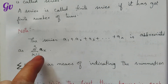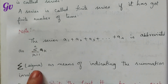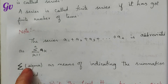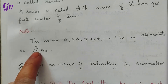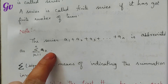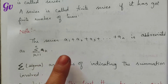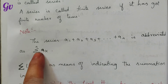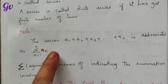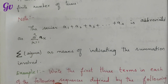Summation k equal to 1 to n of ak. This symbol is actually sigma, a Greek letter, and sigma means summation — summation is equal to addition. So summation k equal to 1 to n of ak means: when k equals 1, we get the first term a1; when k equals 2, we get the second term a2; when k equals 3, we get the third term a3. The meaning of summation is to add all the terms together, which we express mathematically using sigma notation.